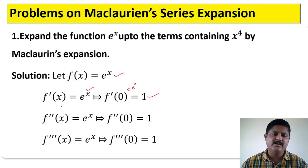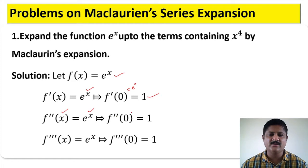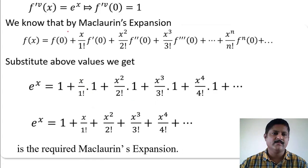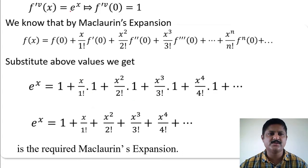Again, differentiation of f'(x) is f''(x) which equals e to the power x itself. f''(0) equals e to the power 0, which equals 1. Similarly, f'''(x) equals e to the power x, which implies f'''(0) equals 1. The fourth order derivative of x equals e to the power x, which implies the fourth order derivative at 0 equals 1.